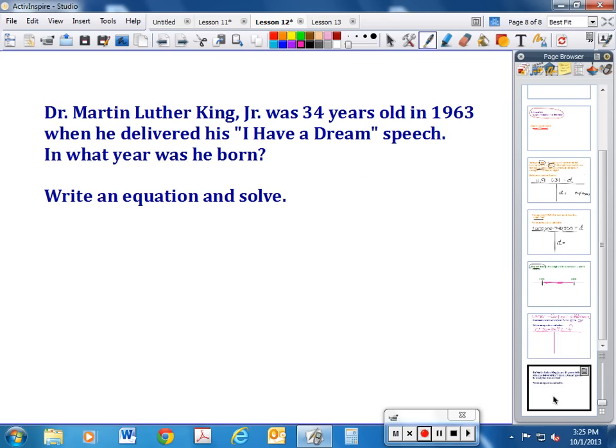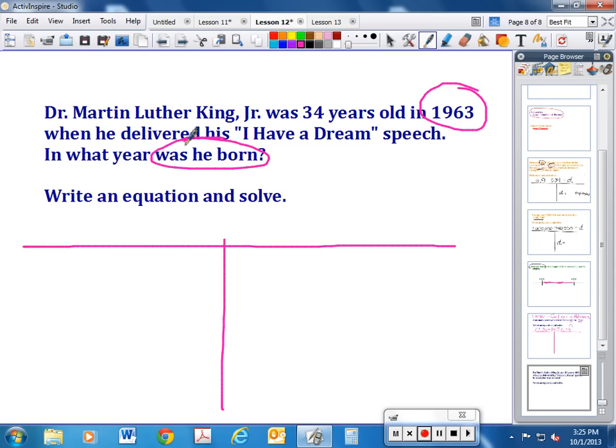All right. Here's an elapsed time problem that I would like you to put in your notes. Dr. Martin Luther King Jr. was 34 years old in 1963 when he delivered his I Have a Dream speech. In what year was he born? Well guys, first of all, let's figure out which was the later date: 1963 or when he was born? Well, can't give a speech if he wasn't born. So 1963 is what you should write in your notes, minus the year he was born, which we don't know, and that equals a total of 34 years. Now you can solve this one in your notes.